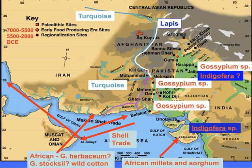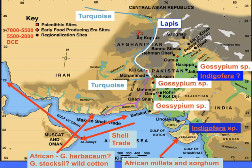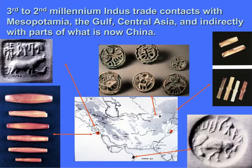We know that African millets and sorghum were coming from Africa and eventually spread into Gujarat by around 2500 BC. African Gossypium herbaceum may have also come at the same time, which may explain why we find it along the coast of Baluchistan where it grows very well. There's also a wild species, Gossypium stoxi, commonly found along coastal regions. There's still much mystery about which species went where, but there's clearly interaction across this region, and cotton is centered in this part of the world to start with.